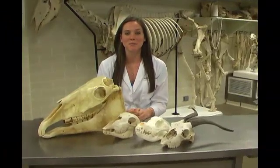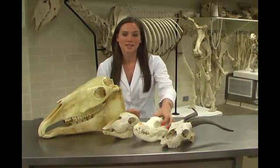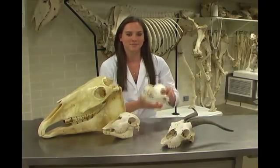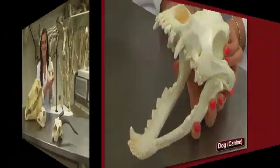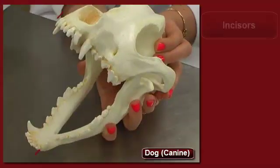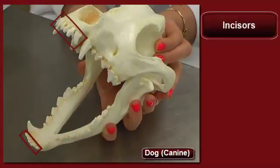There are four types of teeth present in all animals. These include the incisors, which are the sharpest and farthest forward teeth. They're used for cutting and gnawing on food.